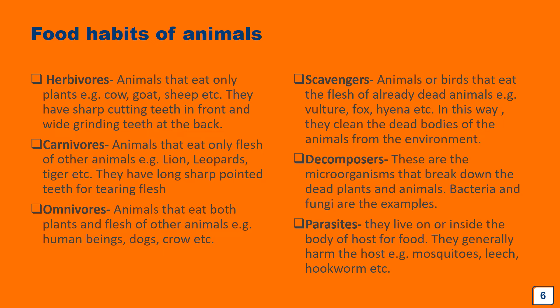Now we will talk about carnivores — animals that eat only the flesh of other animals, like lion, leopard, and tiger. Their teeth are very strong, long, sharp, and pointed because they need to tear the flesh of other animals. There are other animals like the frog, which is a carnivore but eats insects. It catches its food with the help of a long sticky tongue which is folded inside its mouth — whenever an insect comes around, it projects its tongue and catches the insect easily. Animals that eat both plants and flesh of other animals are called omnivores, like human beings, dogs, and crows.